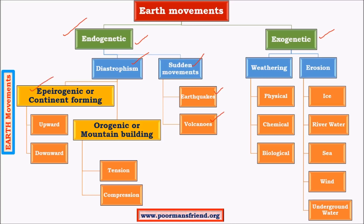The first important movement is called epirogenic or continent-forming movements. These movements are mainly involved in shaping of the continents, and there are two kinds: upward and downward movements. They are also called radial movements because they take place along the earth's radius — the axis passing through the earth's center.